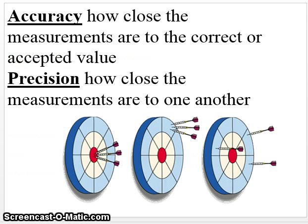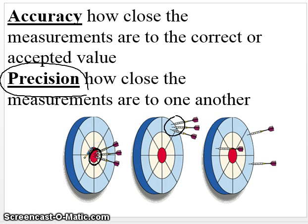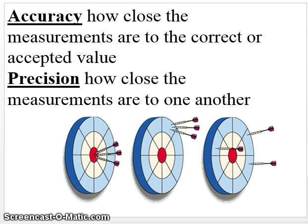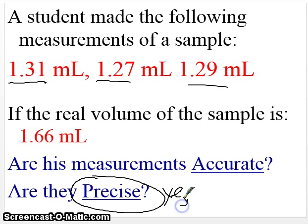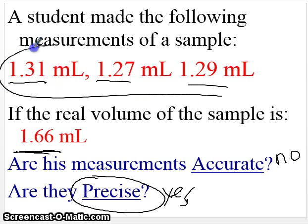We'll finish up by talking about accuracy and precision in measurement. Accuracy is how close measurements are to the correct value. Precision is how close measurements are to one another. Using the darts analogy: if darts are close together but don't hit the bullseye, they're precise but not accurate. If they're close together and hit the bullseye, they're both precise and accurate. If they're spread out and miss the bullseye, they're neither. For example, measurements of 1.31, 1.27, and 1.29 are close to each other, so they are precise — but if they don't match the real value, they are not accurate.